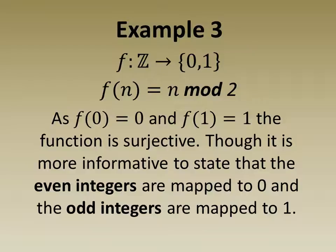In example 3, we consider a function f from the integers to the set {0, 1}, whose value at n is n mod 2. As f(0) = 0 and f(1) = 1, the function is surjective. Though it is more informative to state that the even integers are mapped to 0 and the odd integers are mapped to 1.